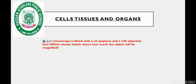Question number one: a microscope is fitted with a 5x eyepiece and a 20x objective lens. Which answer shows how much the object will be magnified? If the eyepiece is 5x and the objective lens is 20x, then the object will be magnified 100x.